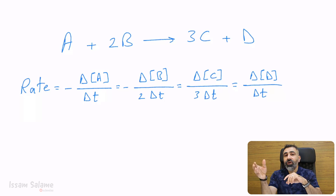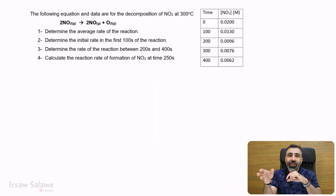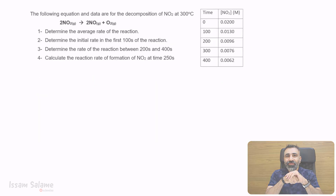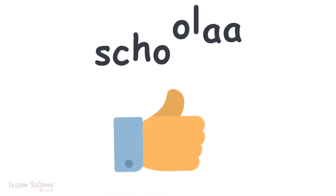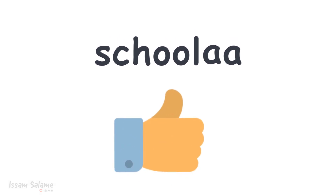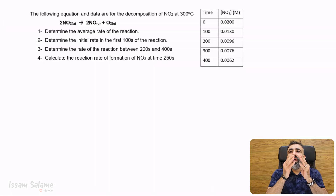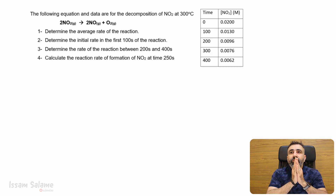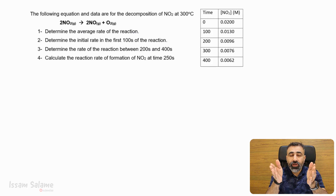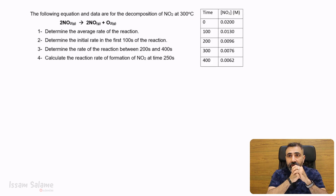Now let's move to the practice part by solving this exercise. The following equation and data are for the decomposition of NO2 at 300 degrees Celsius. We have a table that shows the concentration of NO2 at different times.